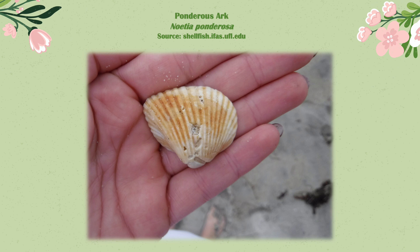This little guy is a ponderous arc shell, Noetia ponderosa. Something interesting I found out is that these feed through a little figure-eight-shaped opening in the mantle, and they snack on plankton.